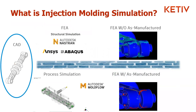When we say simulation, we typically think about finite element analysis - the bending of a beam, something fairly simple. Whether you're using a structural simulation solution like Nastran, Ansys, or Abaqus, and you run an FEA on a simple part, it's going to give you areas that are safe, areas that may be slightly critical, and tell you what the safety factor is.